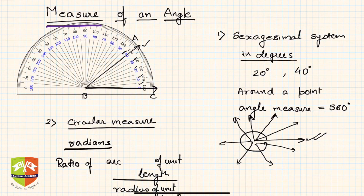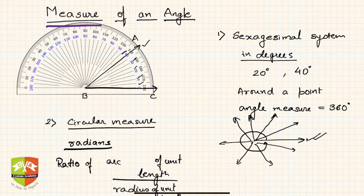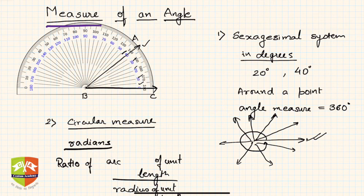So in this session we learned how to measure an angle and why we need to measure it — basically to quantify two angles, compare them, and perform operations on them. We have three ways of measuring angles: sexagesimal (degrees), circular (radians), and centesimal (grades). In subsequent sessions we will deal with how measurement of an angle and other operations on angles are done.